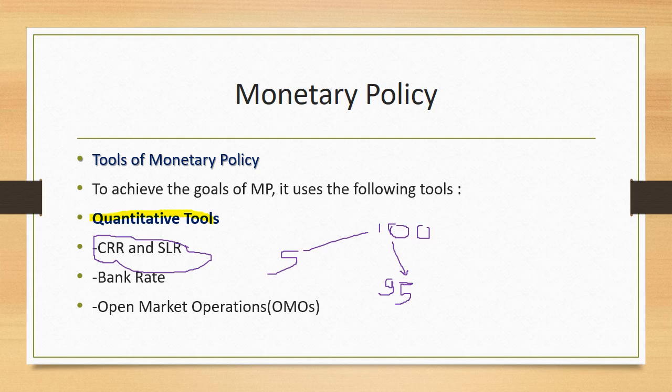SLR is called the Statutory Liquidity Ratio. The central bank requires commercial banks to keep a certain percentage of their deposits in liquid assets. In this way, the central bank and commercial banks work together to control deposit allocation.